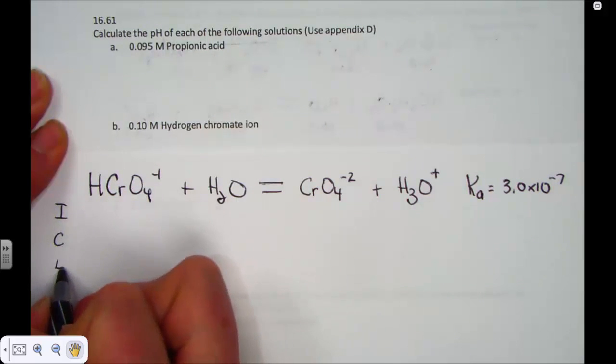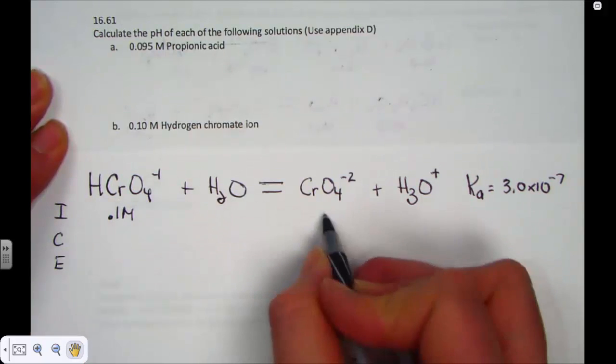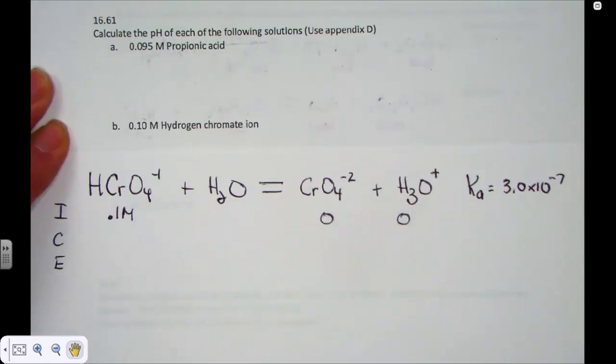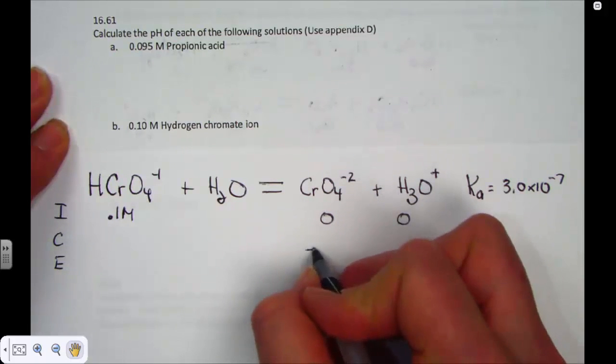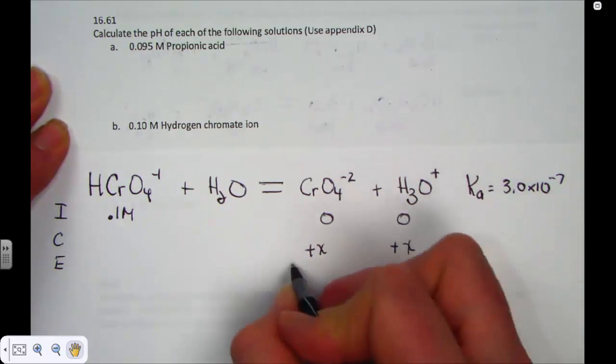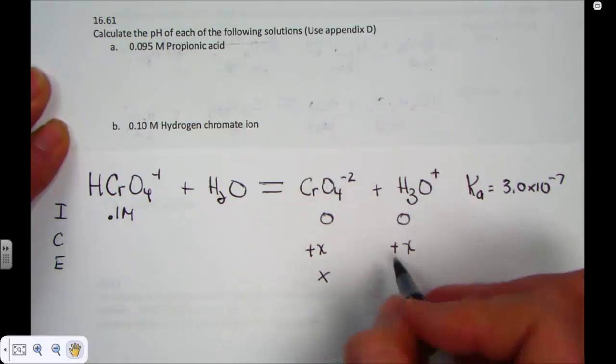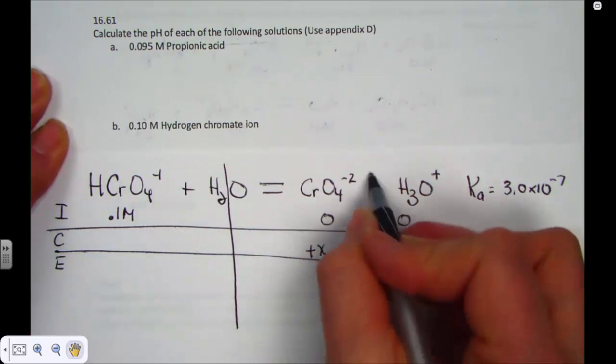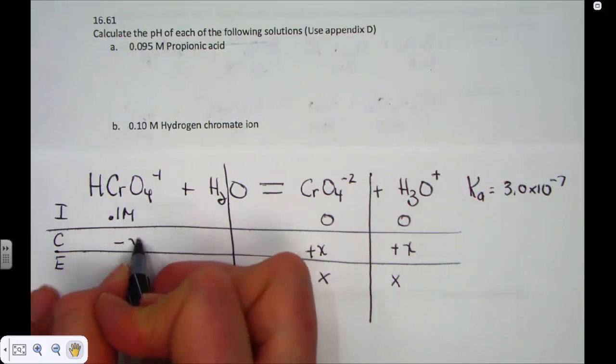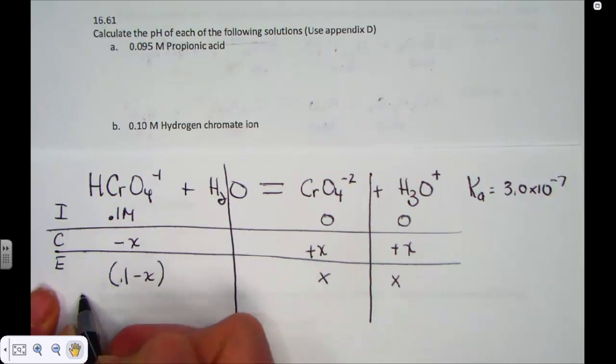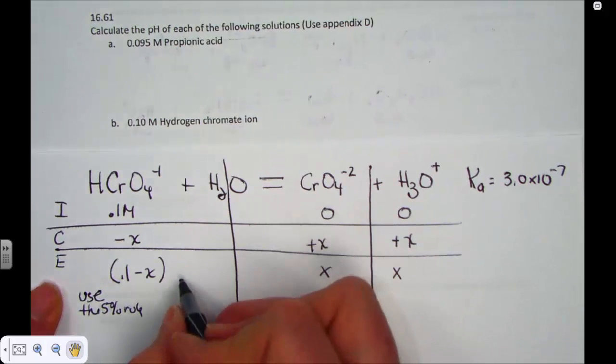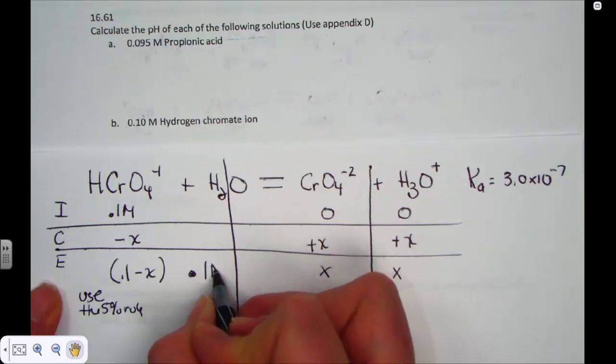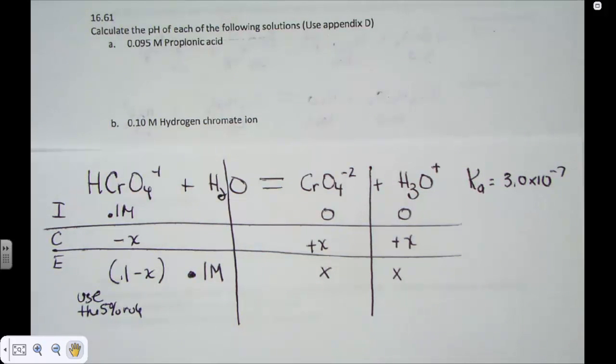Here's what we know in our ICE chart. The initial concentration is 0.1 molar. There would be 0 values for each of those ions, they're not yet made. We know that the ions get made. So at equilibrium, we would have X as the value of the chromate and X as the value of hydronium. Now here I know this should be minus X, and we come up with 0.1 minus X, but let's use the 5% rule. We'll check it, but if I use the 5% rule, I'm going to just say this remains pretty constant at just a tiny bit less than 0.1.